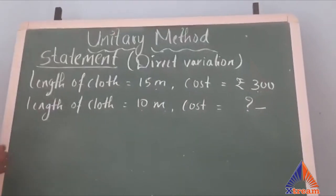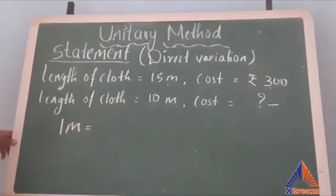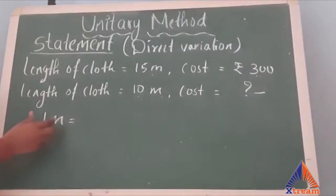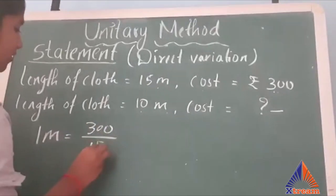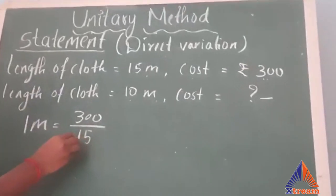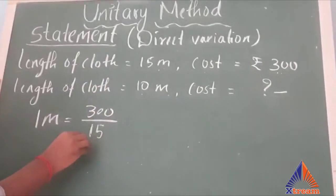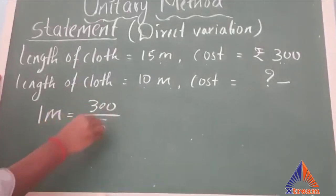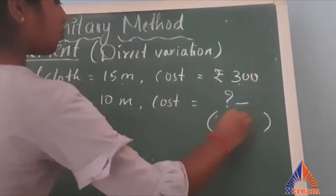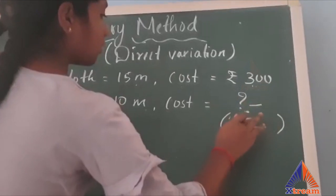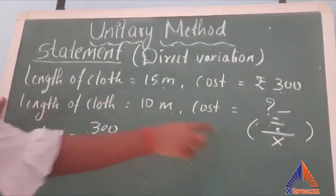To find the cost of 10 meters, we should first find the cost of 1 meter. To find the cost of 1 meter cloth, we divide: 300 divided by 15. Remember, the quantity (cloth) is written in the denominator and the price in the numerator. For direct variation, the sequence is: first divide, then multiply.